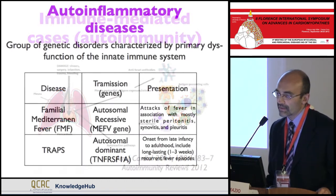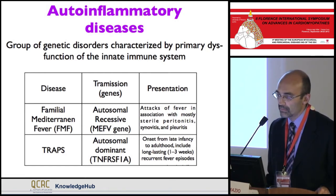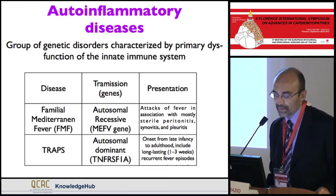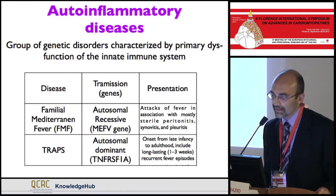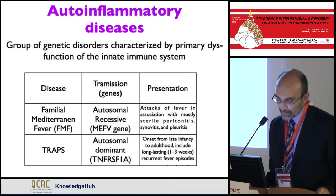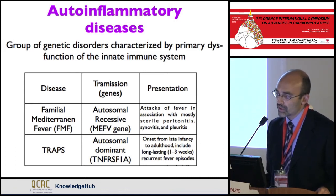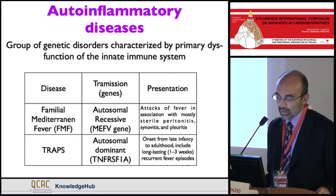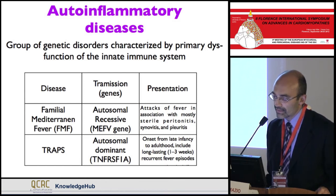There is also evidence for autoinflammatory diseases — genetic disorders characterized by primary dysfunction of the innate immune system. The most important is familial Mediterranean fever, especially prevalent in the Middle East; it is an autosomal recessive disease with typical attacks of fever associated with polyserositis. There is also TRAPS — tumor necrosis factor receptor-associated periodic syndrome — an autosomal dominant form with onset from late infancy to adulthood, characterized by long-lasting recurrent fever episodes.